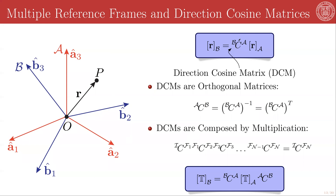In our notation, we will write these as BCA, representing the direction cosine matrix mapping from the components of a vector R in the A frame to the components of that same vector in the B frame. Remember, position vectors are geometric blobs in space having only magnitude and direction — they are completely and utterly frame independent. The components of those vectors are utterly frame dependent, but there exists a linear relationship between the components of the same vector between two different frames, and that relationship is encoded by this matrix multiplication.